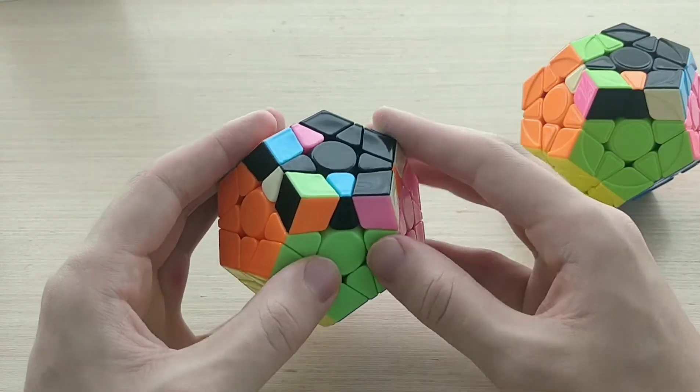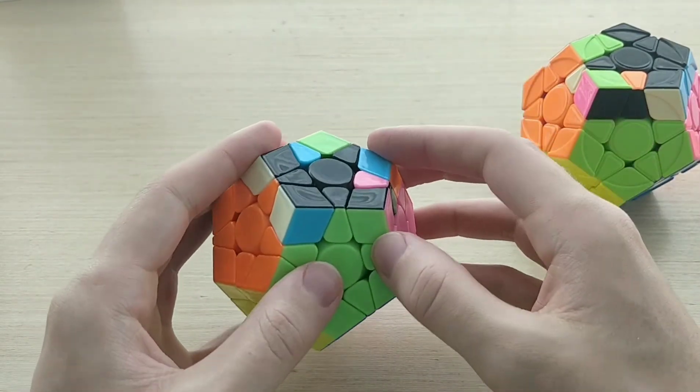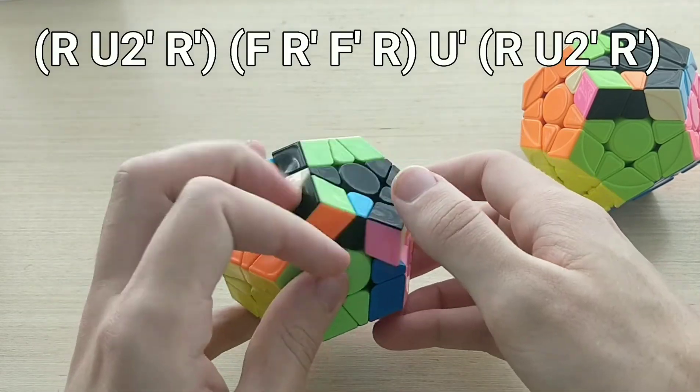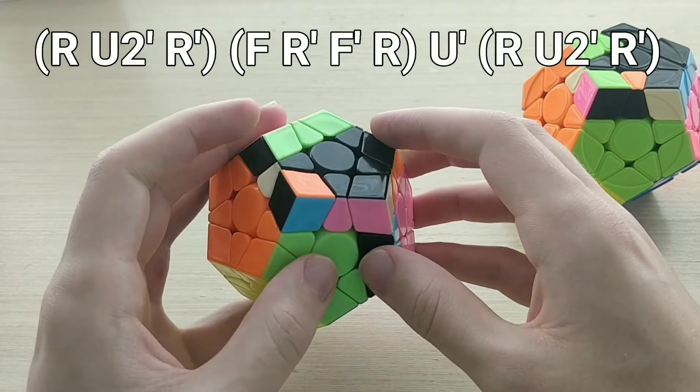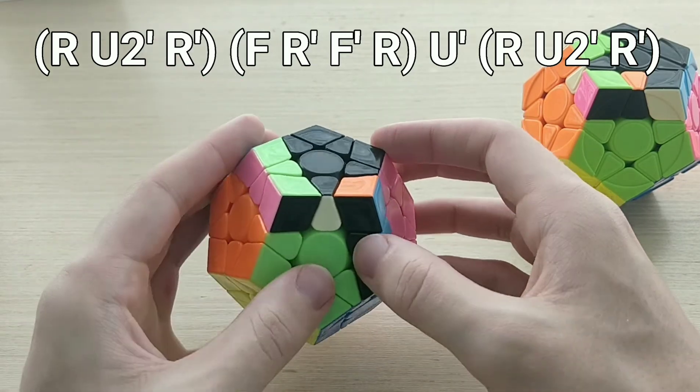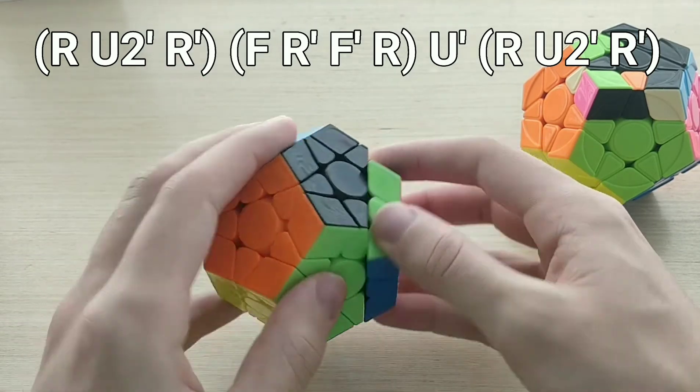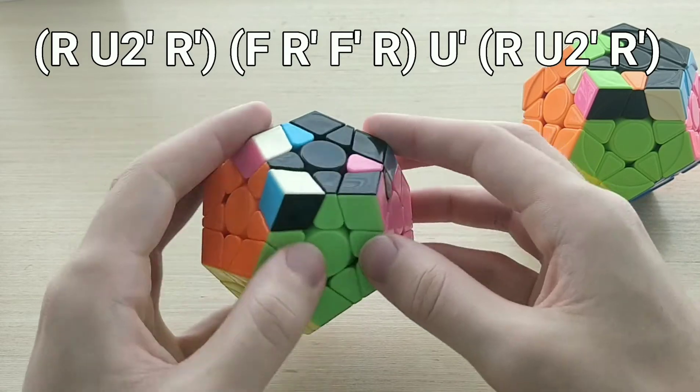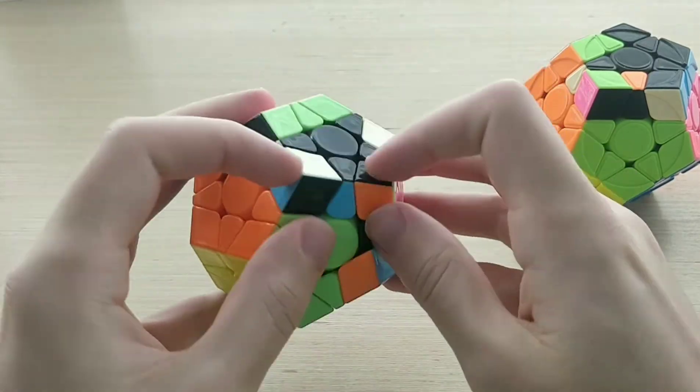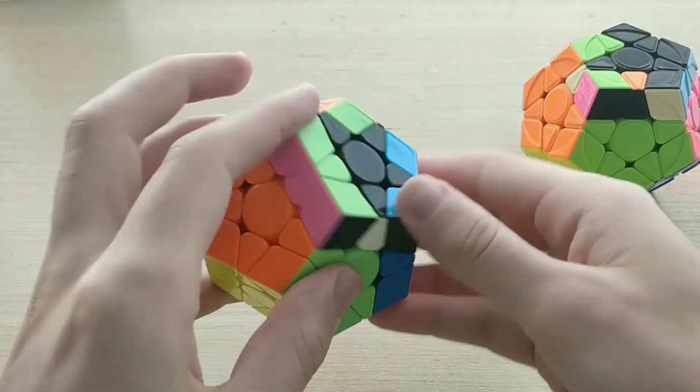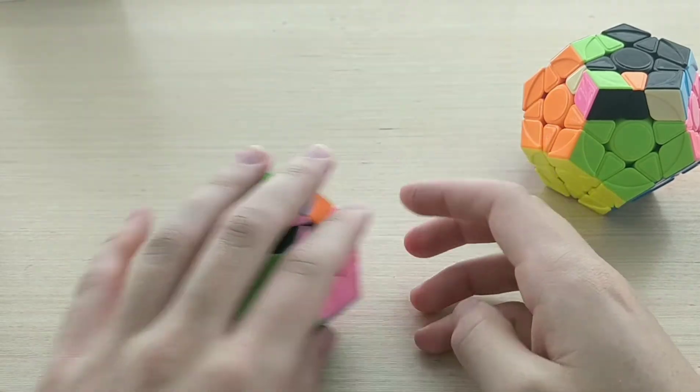For 6a, we're going to hold it so the headlights are at the back here, and then do this algorithm, r u 2 prime r prime, sledge, and then u prime with our middle finger to avoid the reload, and then r u 2 prime r prime. So like that.